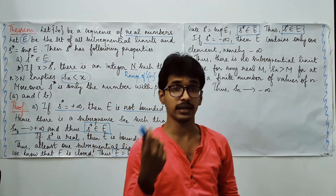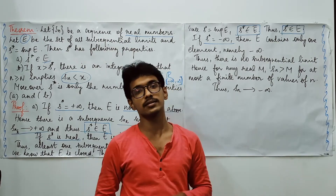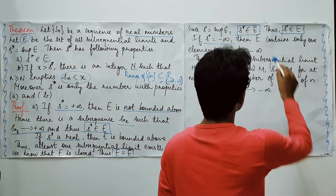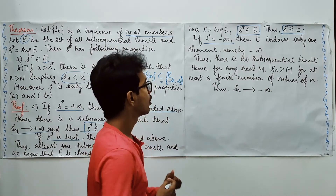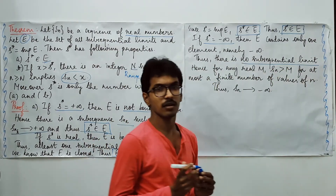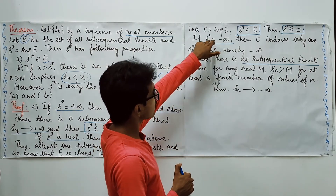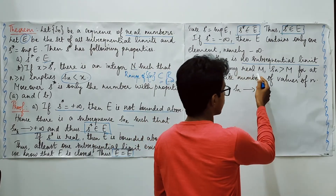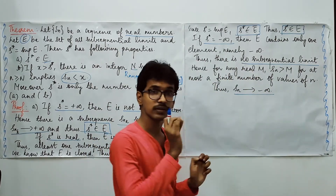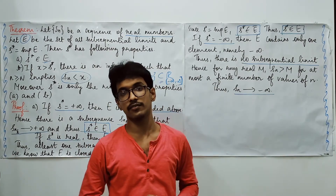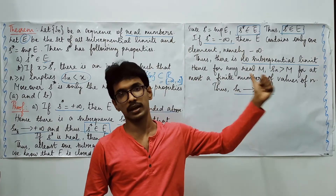When S upper star is minus infinity, the supremum is minus infinity, which means E contains only one element: minus infinity. There is no finite sub-sequential limit. In this case, whatever real number you choose, you can always identify a corresponding stage, and hence the sequence itself goes to minus infinity.